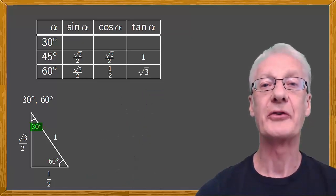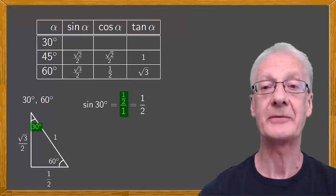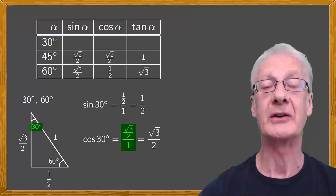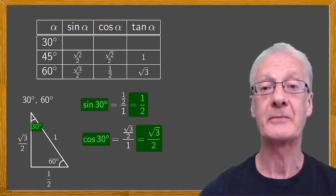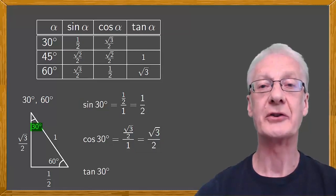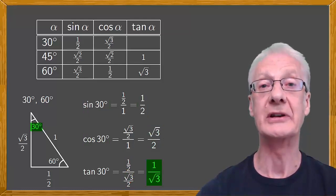Finally, for the angle 30 degrees, its sine is the opposite side, a half, divided by the hypotenuse 1, which is simply a half. And the cosine of 30 degrees is the adjacent side, which is root 3 over 2, divided by the hypotenuse 1, which simplifies to root 3 over 2. We'll add these results to the table. The tangent of 30 degrees — sine over cosine — comes out to be, when simplified, 1 over root 3, or if we rationalize the denominator, root 3 over 3.